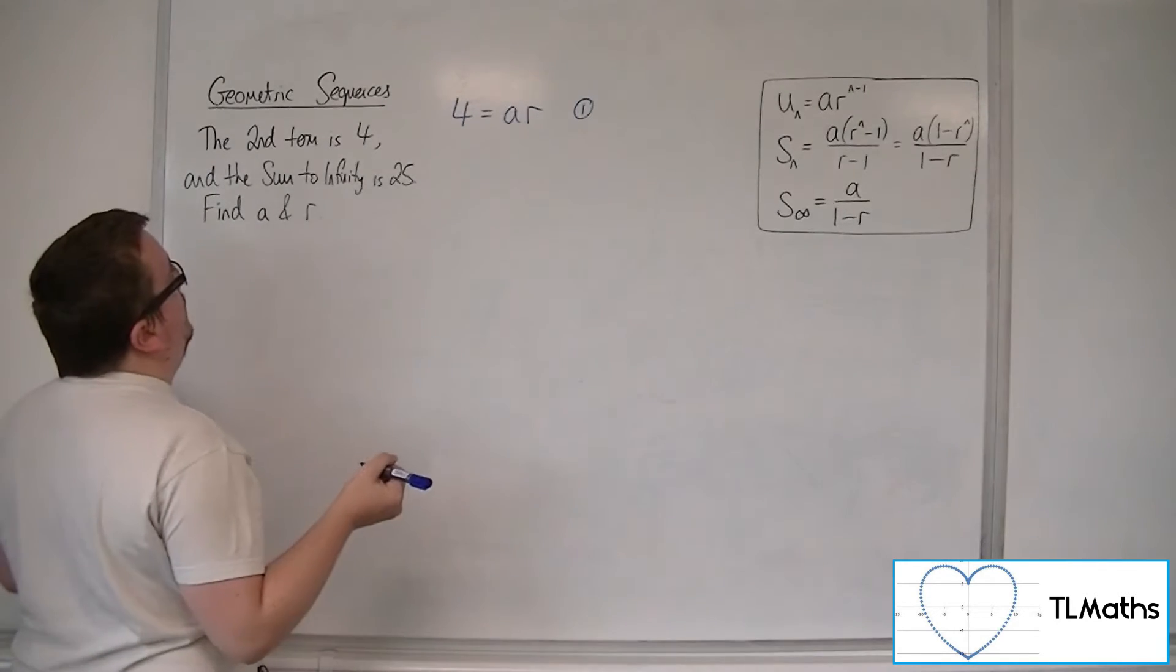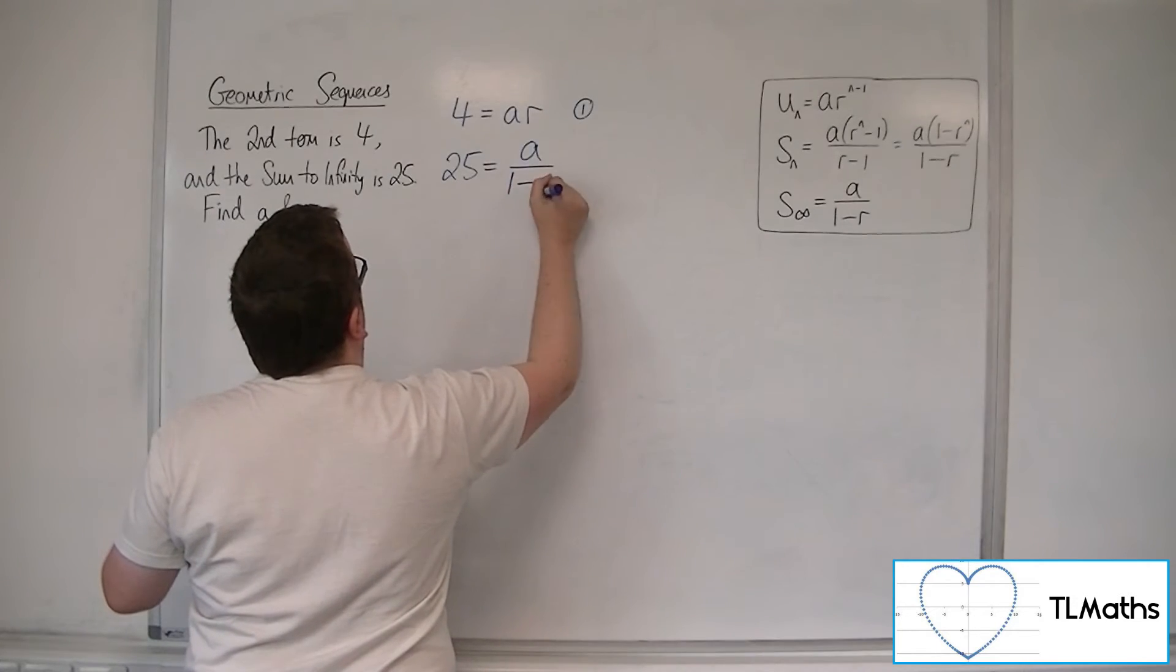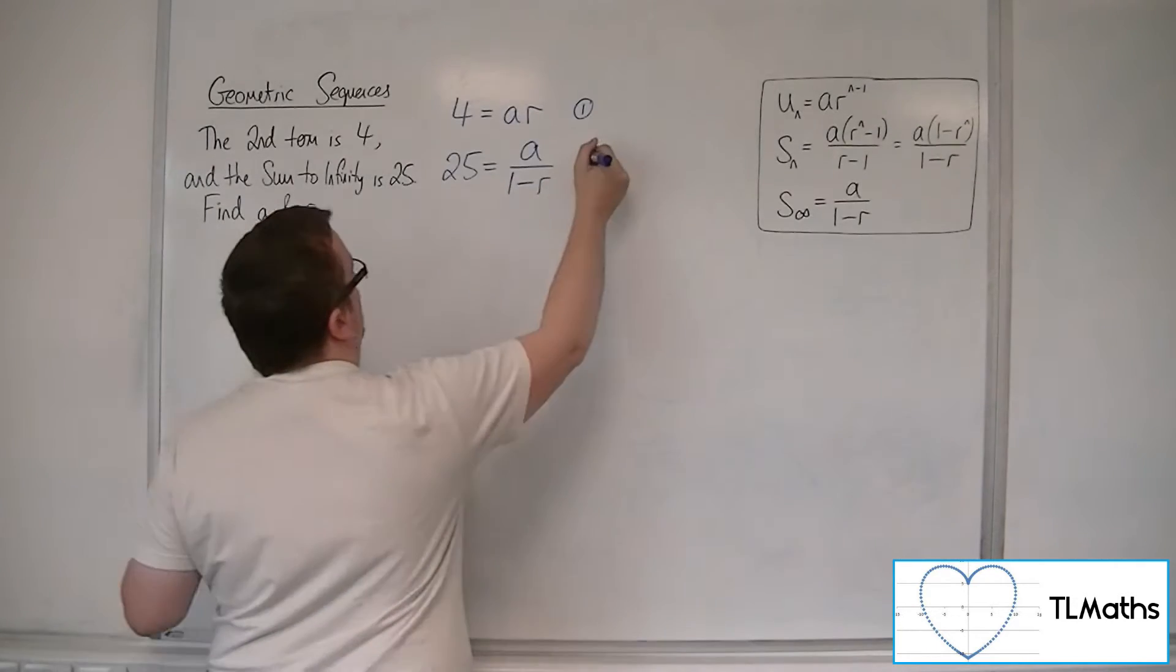Then the sum to infinity is 25, so 25 must be equal to a over 1 minus r. That's equation number 2.